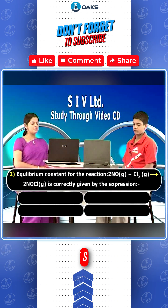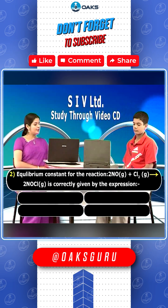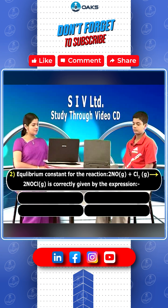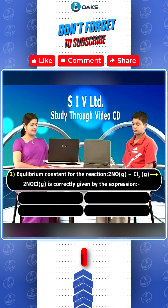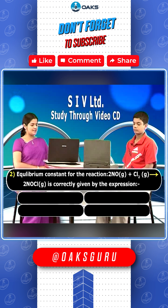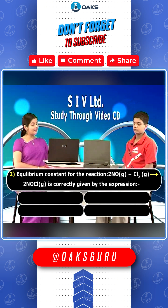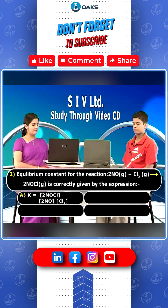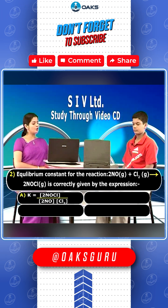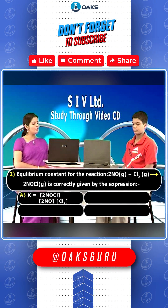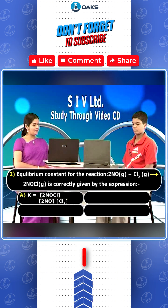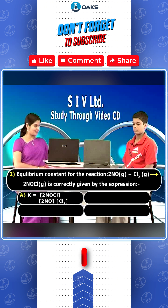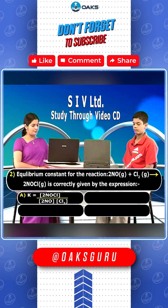The equilibrium constant for the reaction 2NO(g) + Cl₂(g) → 2NOCl(g) is correctly given by which expression? Option A: K equals concentration of 2NOCl divided by concentration of 2NO into concentration of Cl₂.